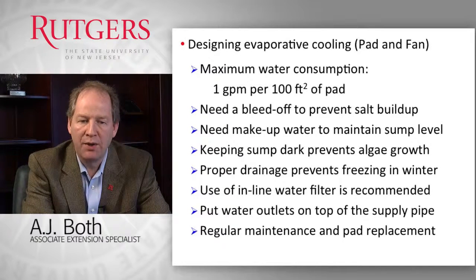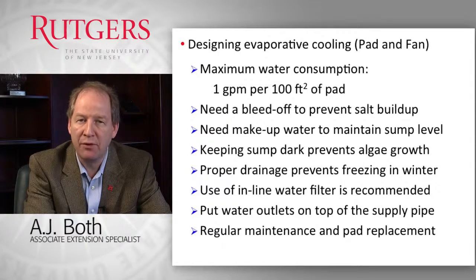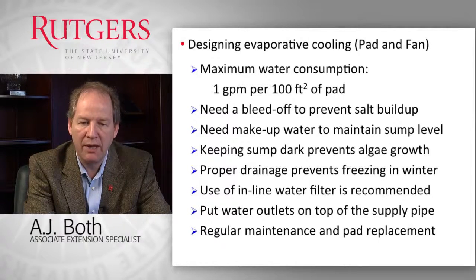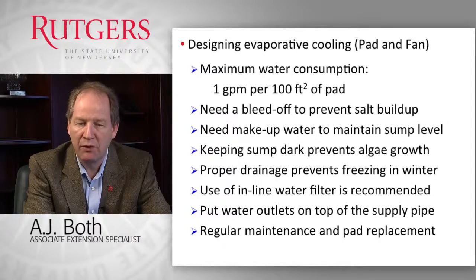If you want to know the maximum water consumption — to have some idea of how much water you need to provide to an evaporative cooling system — as a rule of thumb you can use a number of one gallon per minute per every 100 square feet of pad area. This number will change depending on conditions; if you are in a desert environment where the air is very dry, that number may be higher. But as a first approximation, one gallon per minute per 100 square feet of pad area is a good starting point.